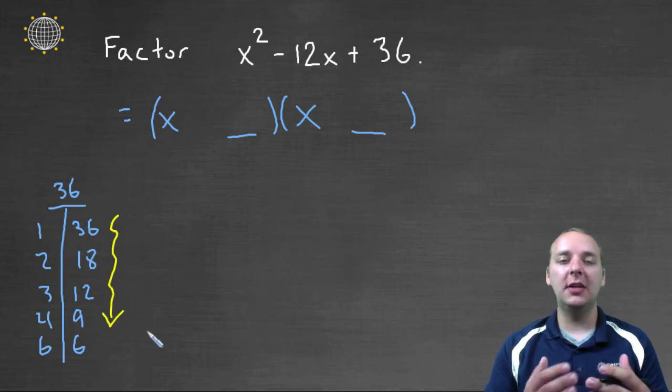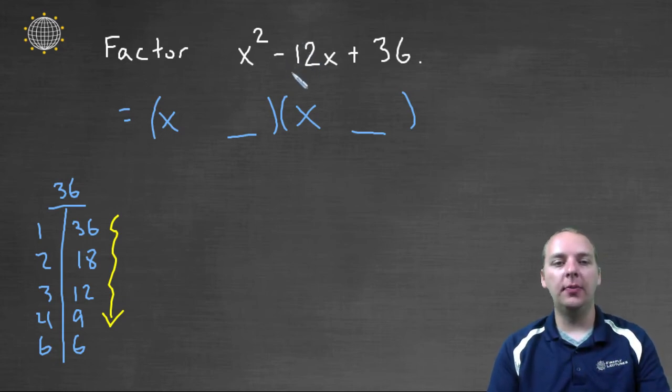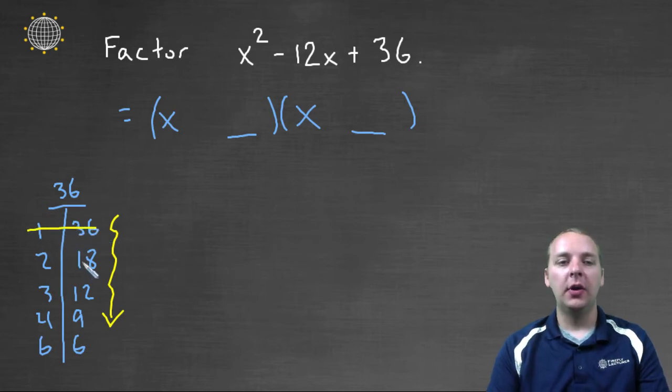Let's see which of these, if the signs could be anything we wanted, could possibly add up to -12. Well, 1 and 36 - I don't care what your signs are - those can't add to -12. 2 and 18, same thing. 3 and 12, 4 and 9, maybe 6 and 6.